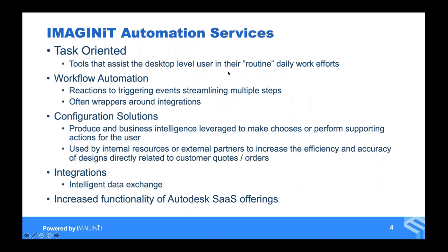Let's focus on what types of automation services we're going to be talking about, and maybe some that Imaginant has done for you in the past or will do hopefully in the future. These can be broken down into larger buckets — task-oriented tasks. Things that I often say make AutoCAD draw two lines instead of one. That can be extended into all of the modern platforms — you're taking a current design task that you do on a routine basis, and Inventor is a perfect example.